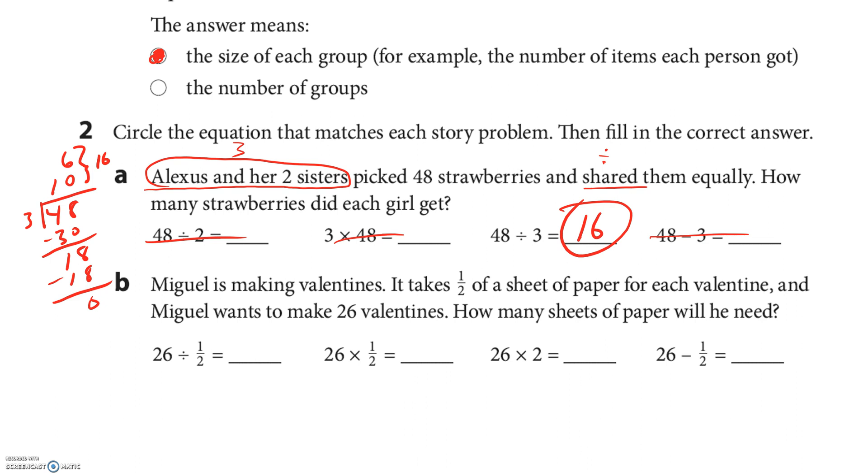Miguel is making Valentine's. It takes half a sheet of paper for each Valentine and Miguel wants to make 26 Valentines. So we need to multiply, he wants 26 of them, so 26 times half. Do you see it right there? And then 26 times a half, that means half of 26, which is 13.